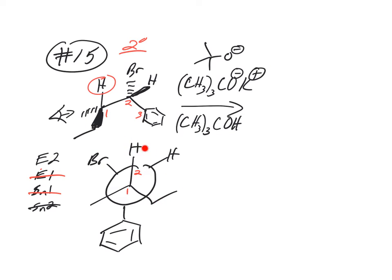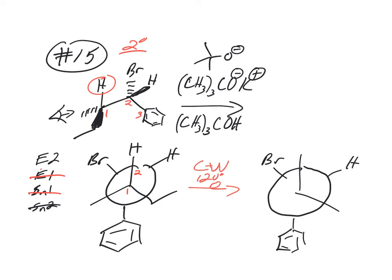Take this H and put it over here. It's going to rotate clockwise 120 degrees. I didn't move carbon two at all, so the bromine stays there. Of course, still need the staggered conformation. There's the H, there's the ethyl. Carbon one, carbon two. Now our bromine and our hydrogen are anti-periplanar.